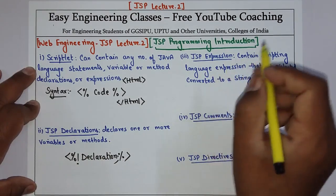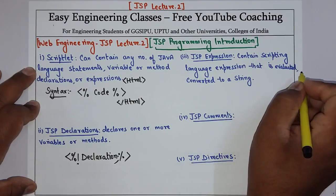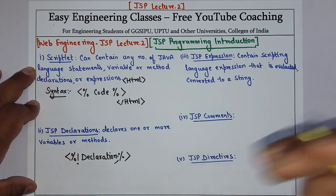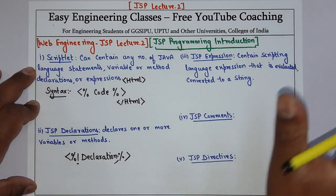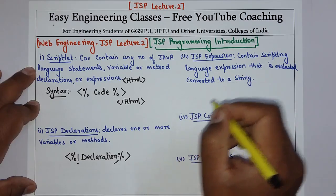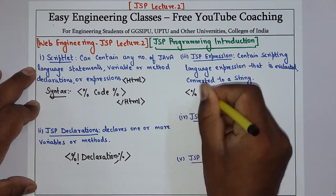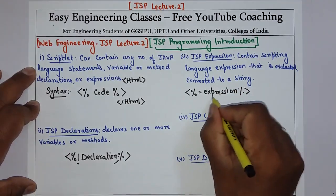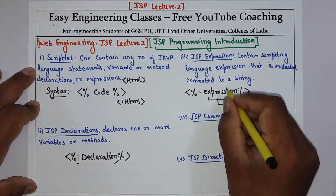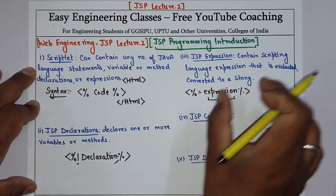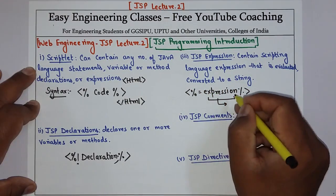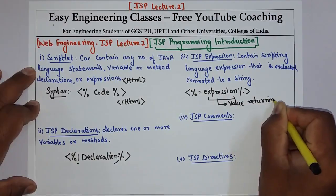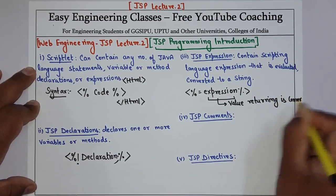Then we have the JSP expression. It contains a scripting language expression that is evaluated and converted to a string. So if we want to process any expression, that expression needs to be converted into a string. The syntax is: equals sign followed by the expression. Whatever value this expression returns is evaluated and converted to a string.